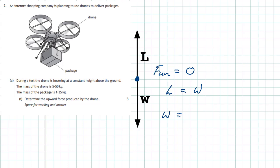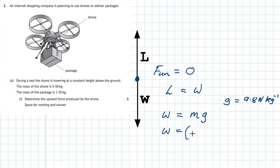The weight of an object is simply equal to the mass of the object multiplied by the gravitational field strength. For this planet, the gravitational field strength is 9.8 newtons per kilogram. We put in the numbers to find the weight, and we have to take the combined mass of the package and the drone: 5.50 kilograms plus 1.25 kilograms, multiplied by 9.8 newtons per kilogram, giving an answer of 66.2 newtons.